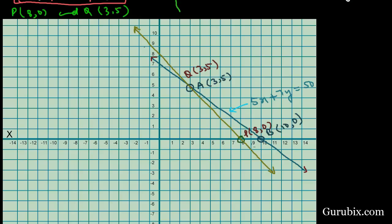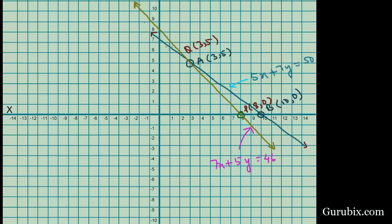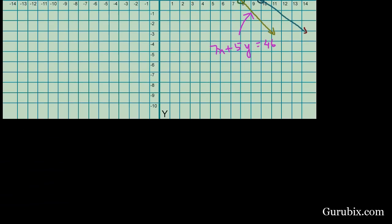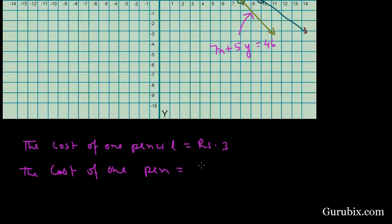The second line represents 7x + 5y = 46. From the graph, we observe that these two straight lines intersect at the point where x = 3 and y = 5. This means the cost of 1 pencil is Rs. 3 and the cost of 1 pen is Rs. 5. This is the solution of the question. Thank you.